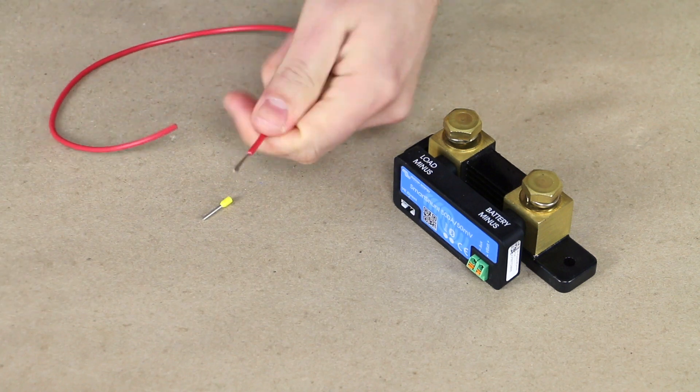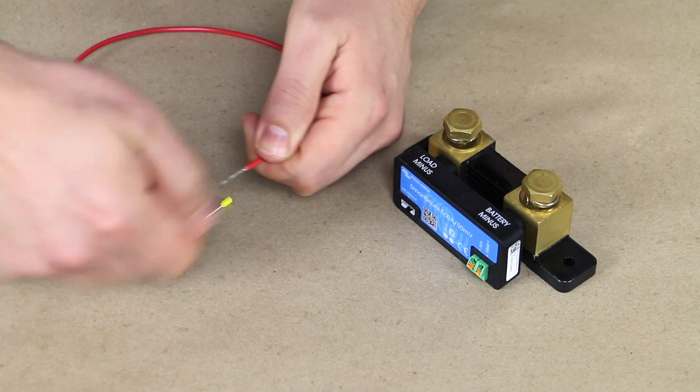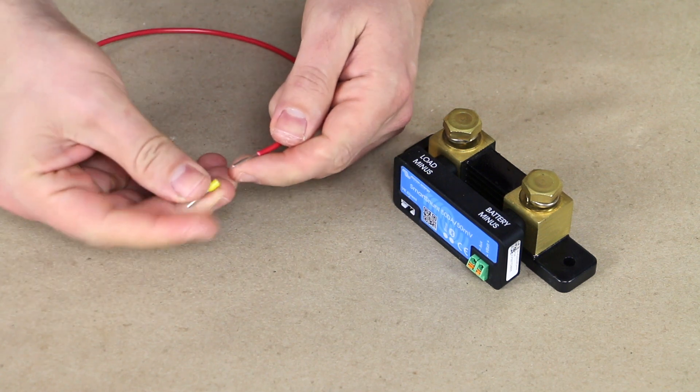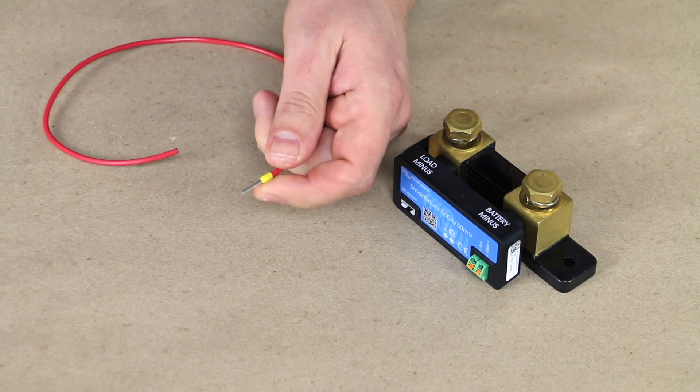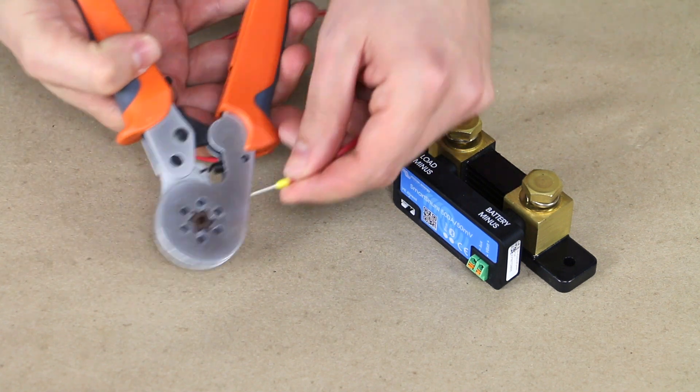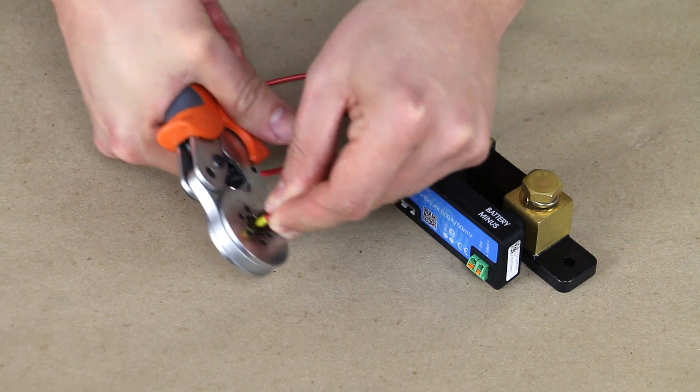If you go too far, you can always trim the strands that stick out the end of the metal tube once it's crimped on there. Grab our crimper and we'll insert the ferrule into the end of the crimper, crush it down.